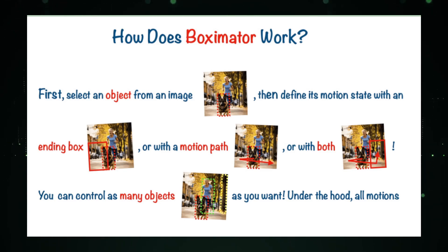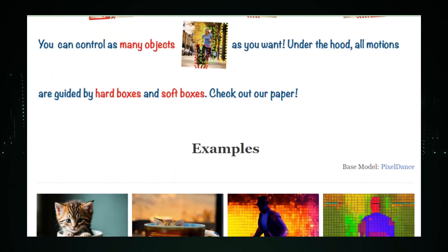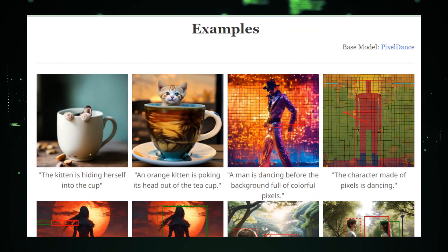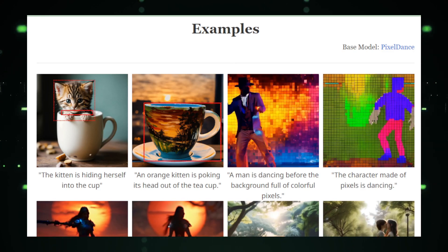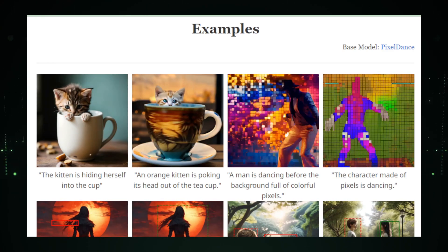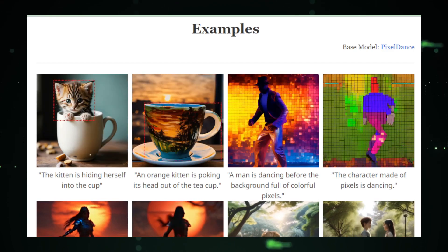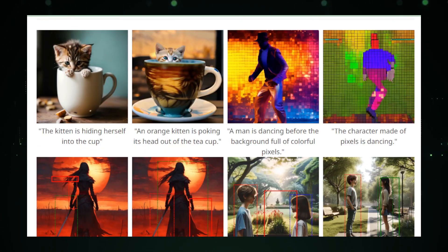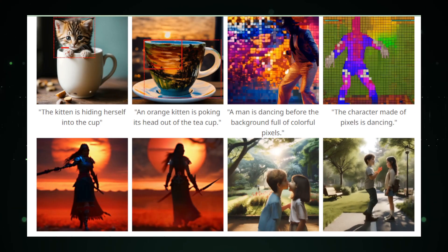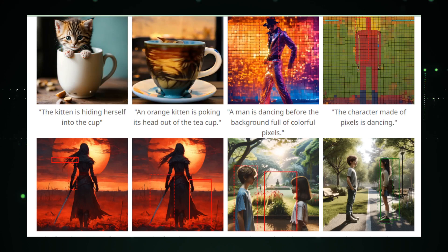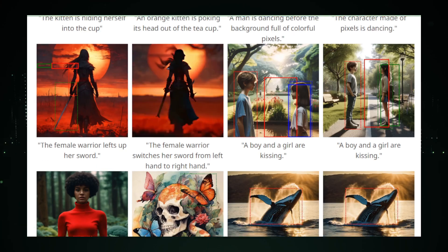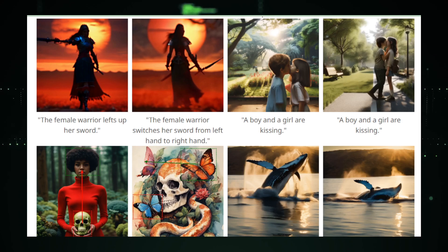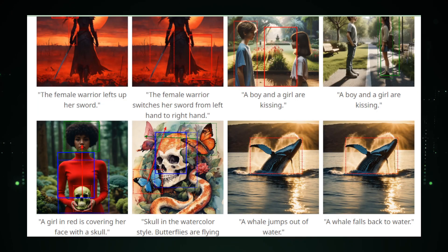Watch as static images awaken and objects glide across your screen, following the paths you've drawn. This is where Boxymator shines — animating objects with a smoothness and fidelity that breathes life into each scene. The once still figures now move with purpose, guided by your creative hand. The true power of Boxymator lies in its ability to handle complexity with grace. Multiple objects, each with their own motion paths, interact in a dance choreographed by you. Complex scenes, once daunting, are now effortlessly animated, revealing stories hidden within a single frame.